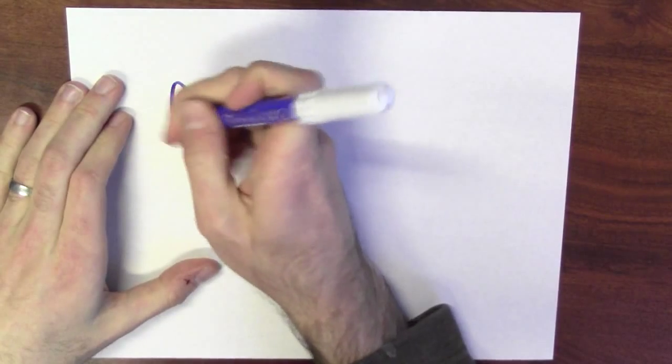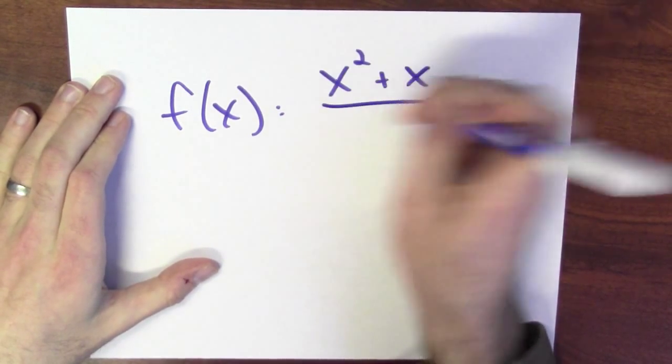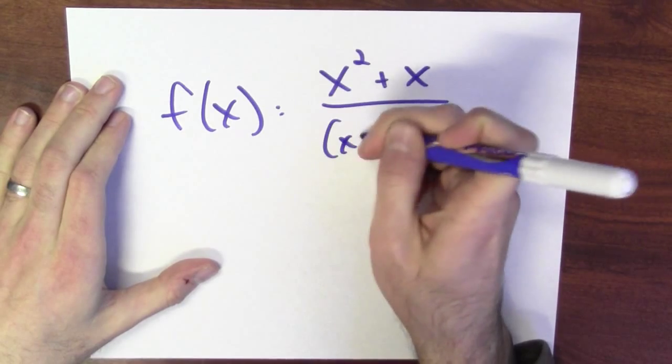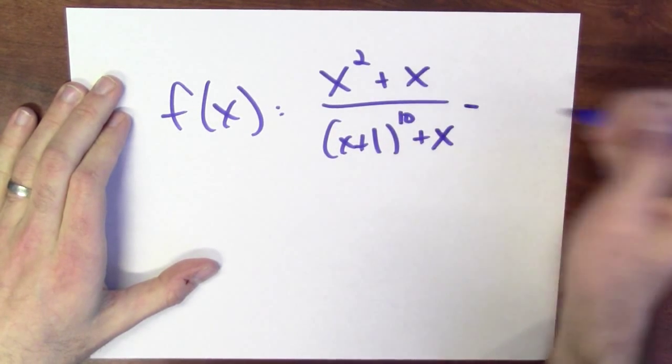Up until now, we've been considering the functions that you can get by starting with variables and numbers and combining them using sums, products, quotients, and differences. So we can write down functions like f of x equals x squared plus x divided by x plus 1 to the 10th power plus x, all of this minus 1 over x. But there's more things in heaven and earth than are dreamt of in your rational functions.